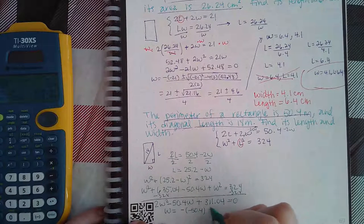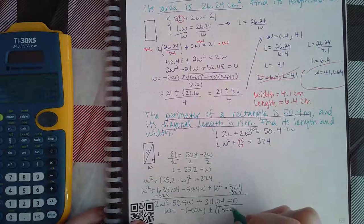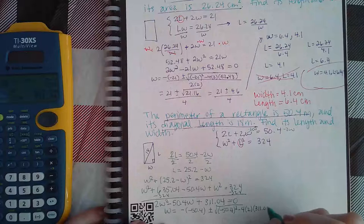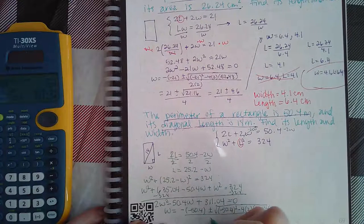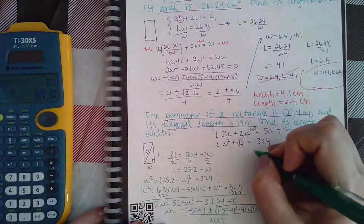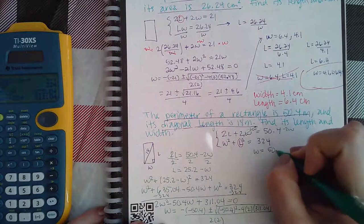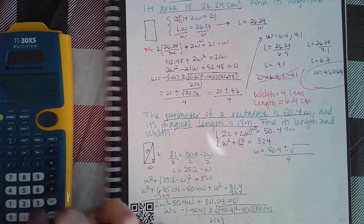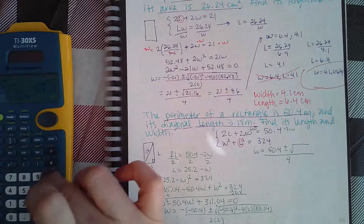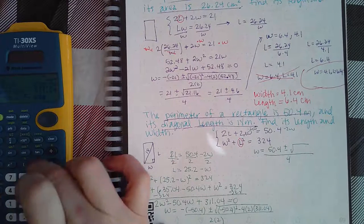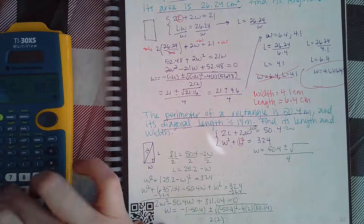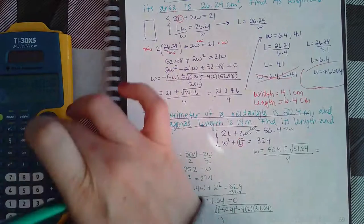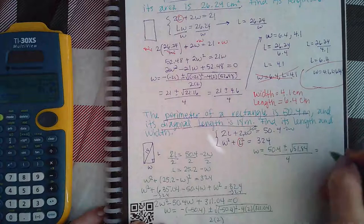So then I'm going to solve for W using the quadratic formula: negative B plus or minus B squared minus 4AC all over 2 times A. I'm going to come up here, so I get 50.4 plus or minus the square root of something over 4. So negative 50.4 squared minus 4 times 2 times 311.04.